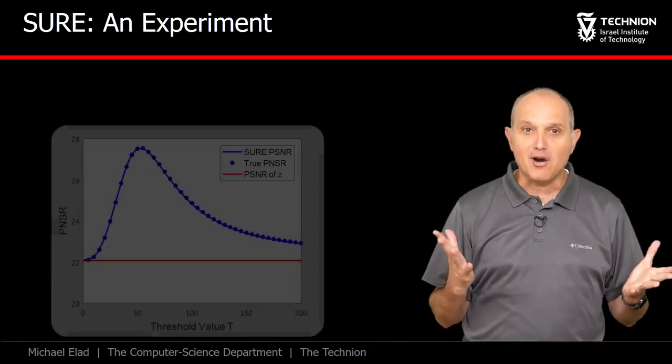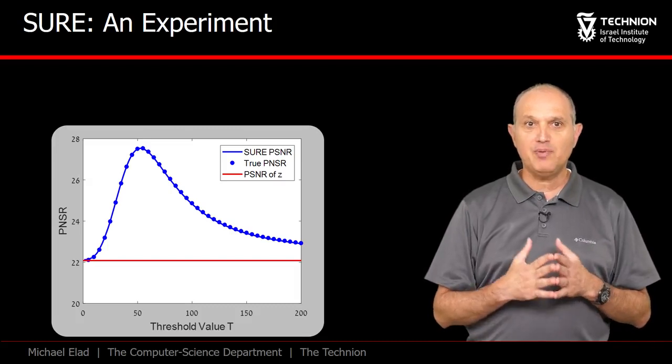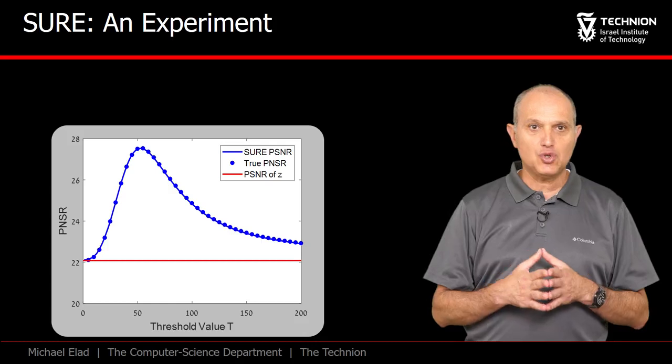Works like a charm! What you see here is the original performance curve in terms of PSNR as a function of T. On top of this curve, the dots are the SURE values.